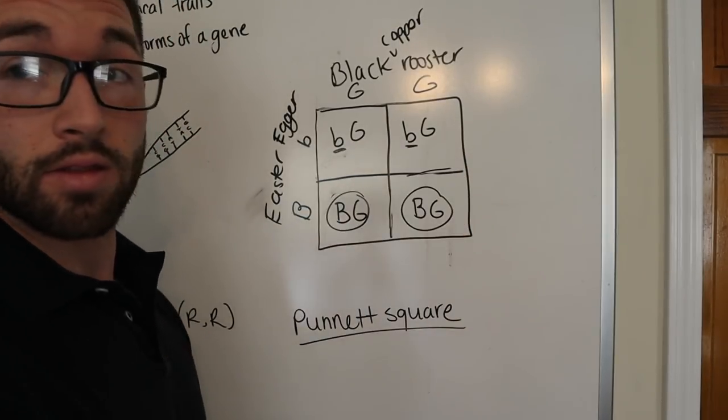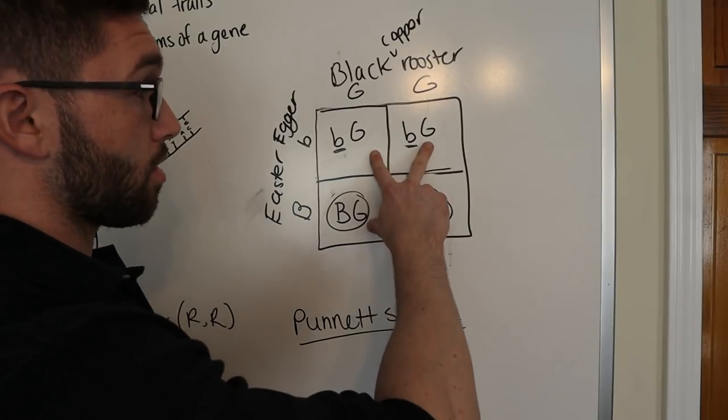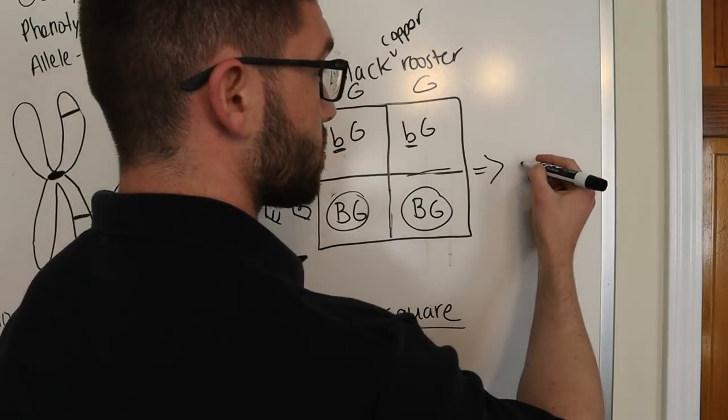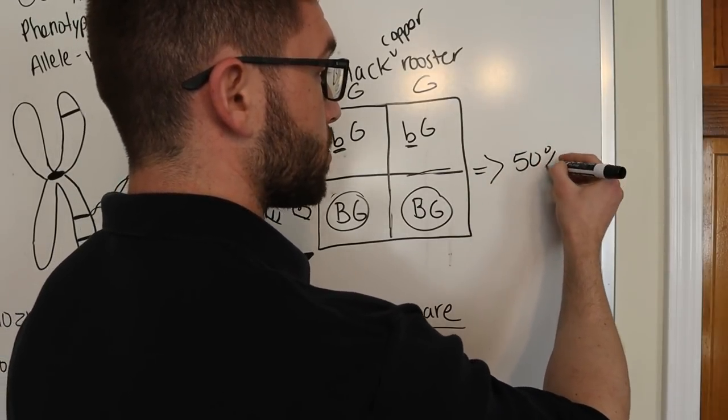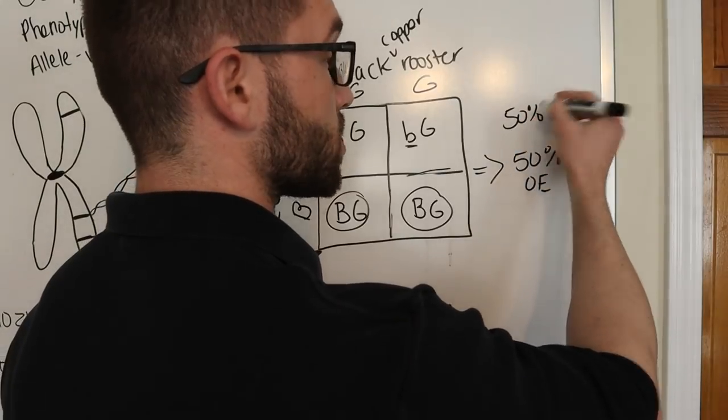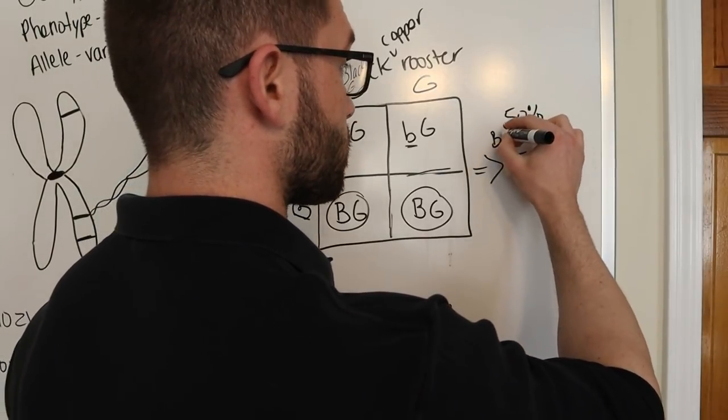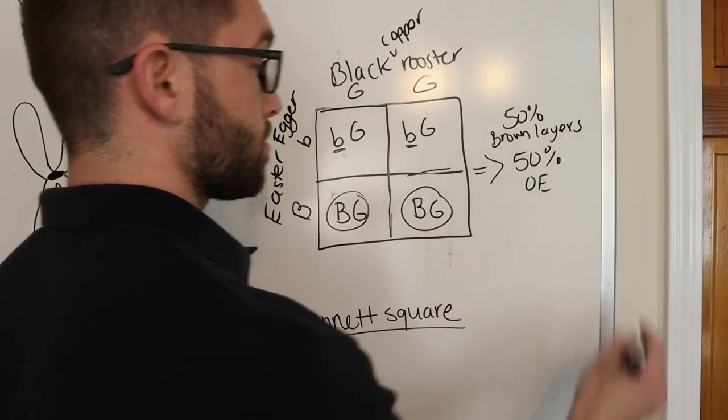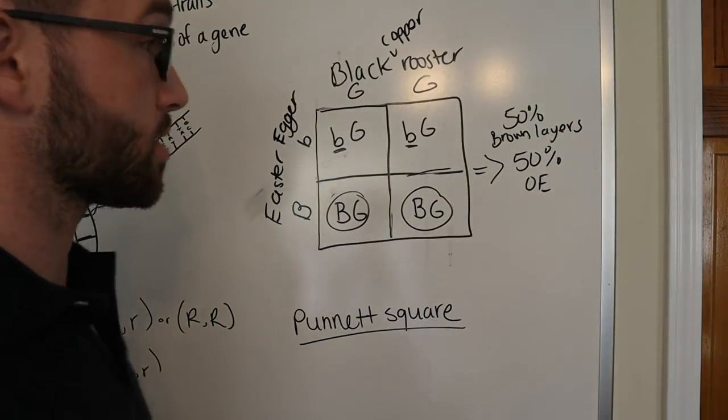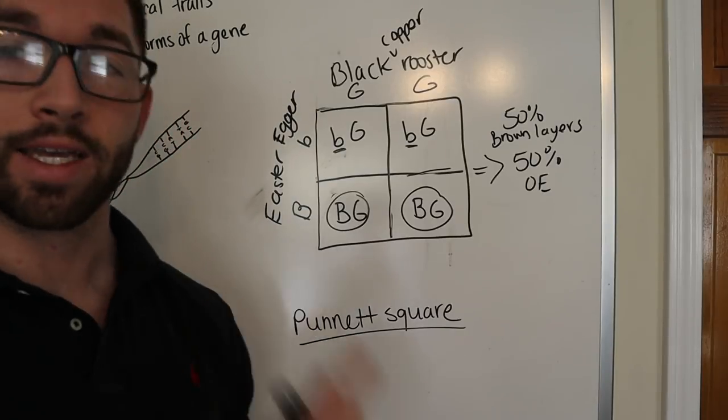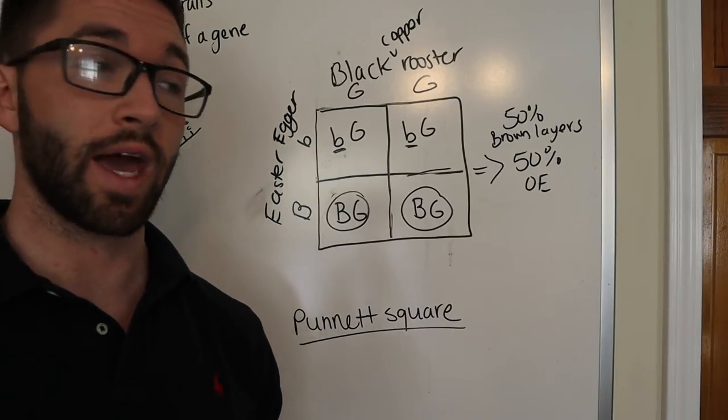Because, since they're dominant, those are the ones that are phenotypically expressed. So, only 50% will actually be olive eggers. And the other 50% will just be plain old brown egg layers. And so, that's what happens when you cross Easter eggers into the mix. This also happens when you use a second generation olive egger.